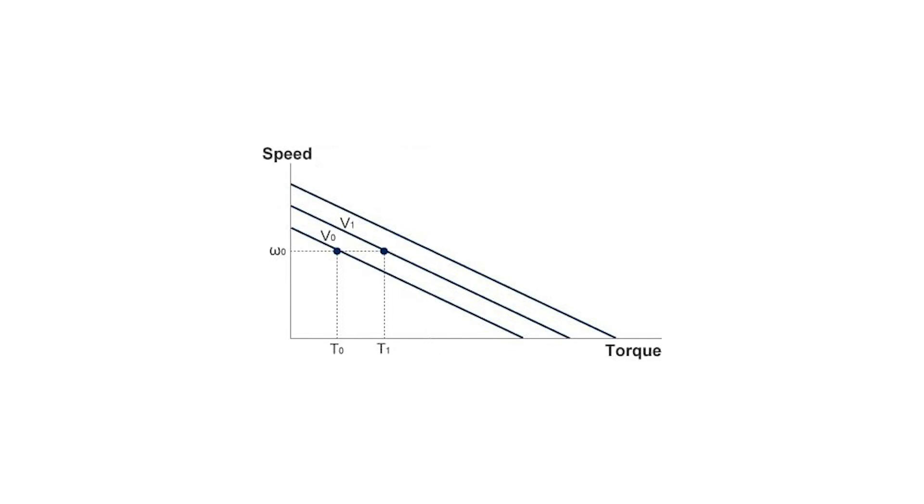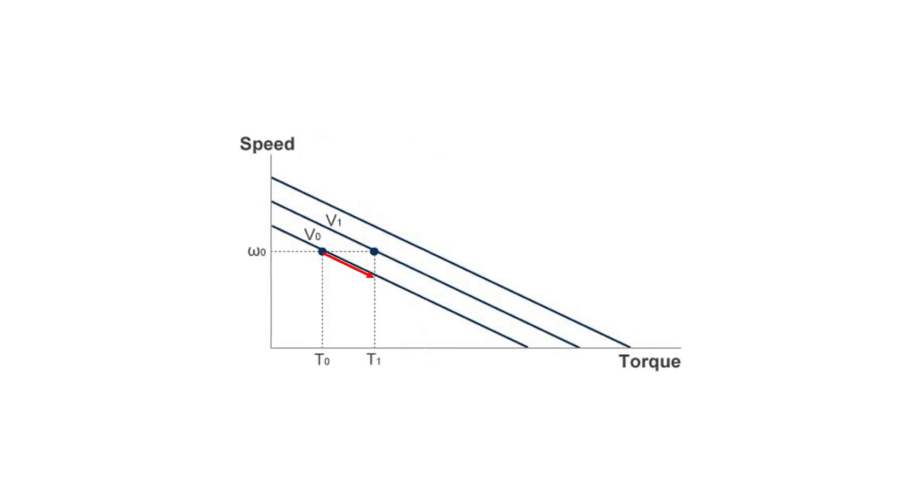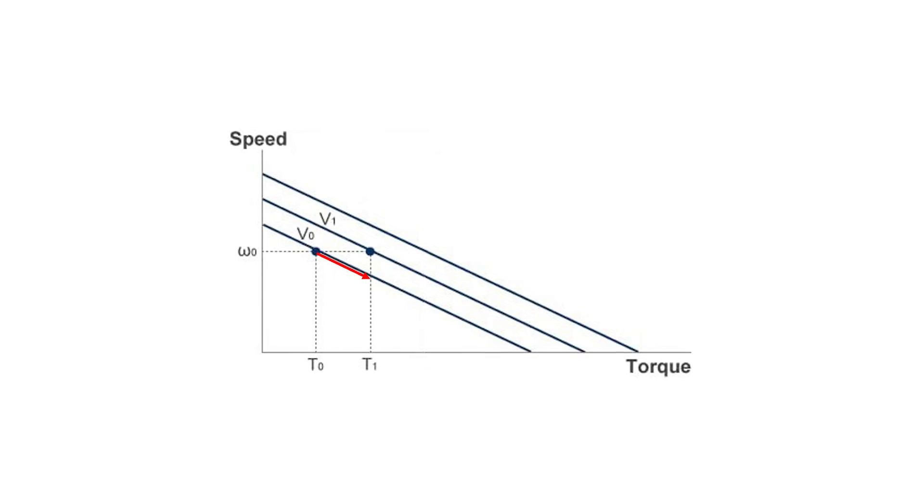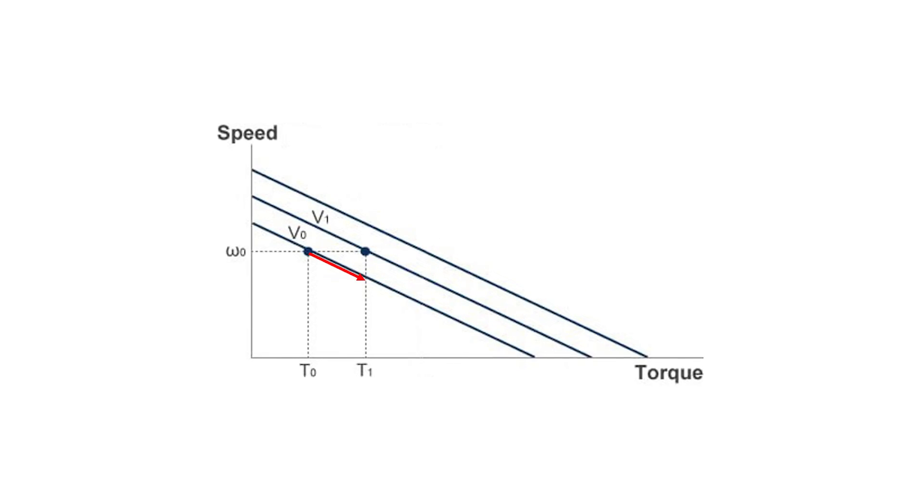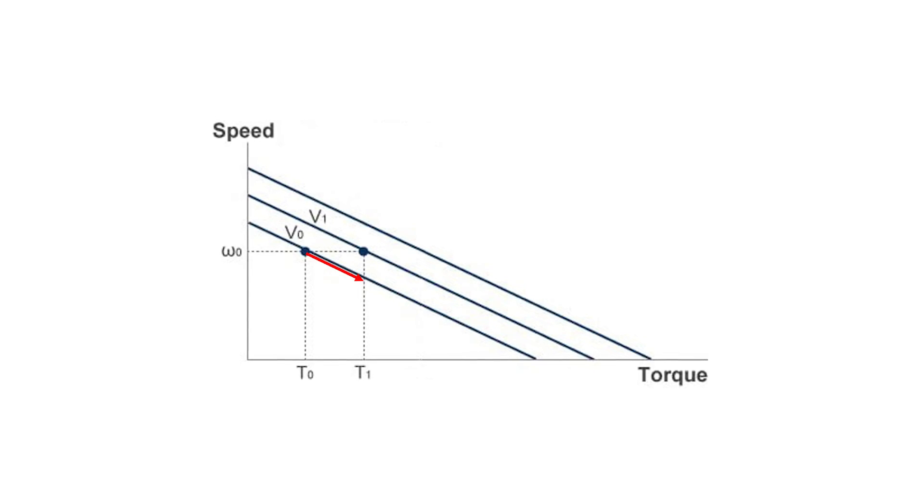For a real-world example, let's look at what happens when a load is applied to a DC motor. We start out at an initial point on the motor's torque speed curve, where T sub zero and omega sub zero intersect. When the load torque on the motor is increased from T sub zero to T sub one, following the downward sloping speed torque curve, you can see that the motor speed decreases.